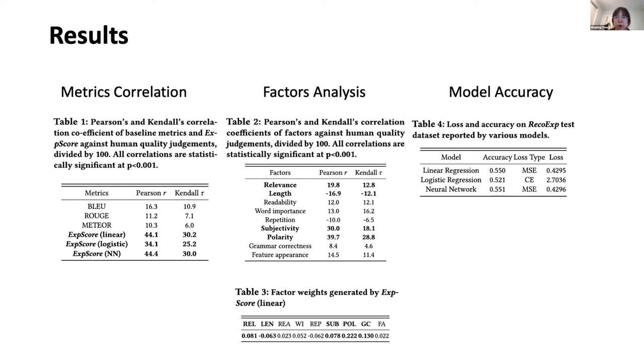In table four, we compare the average test accuracy of the three implementations of ExpScore. Since we both have regression and multi-class tasks, we decided on custom accuracy to measure the learning performance for a fair comparison. We can see the accuracy here is not very high and we could add more factors and utilize more complex models like BERT in the future work. But as the first paper addressing learning metrics for recommendation explanations, we focus on the interpretability of our framework.